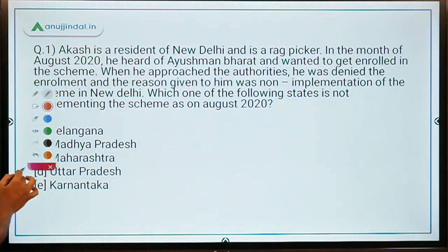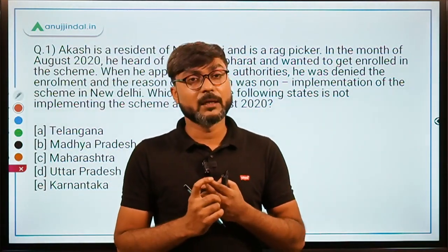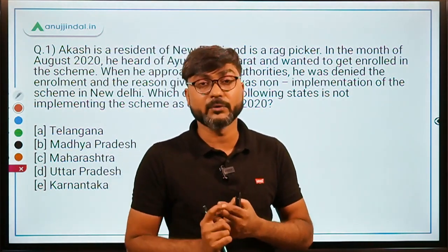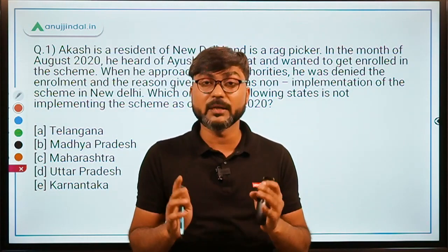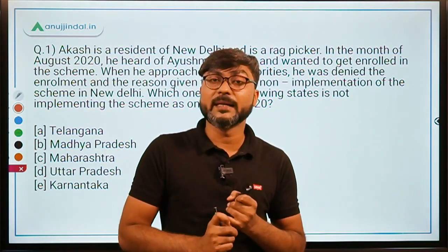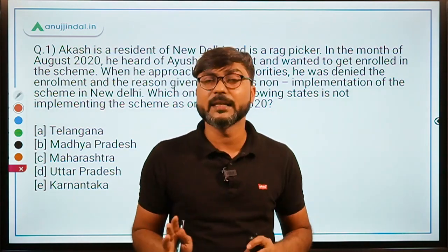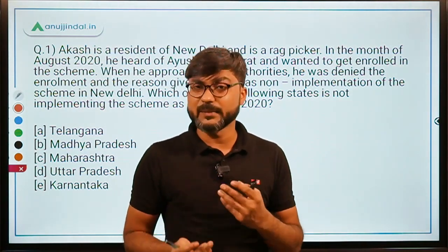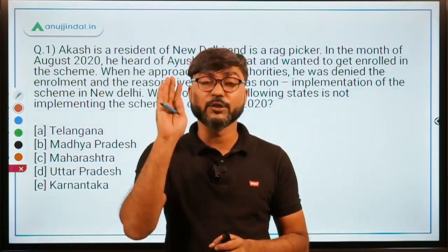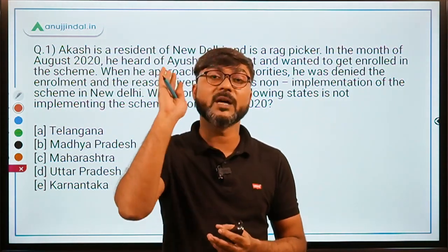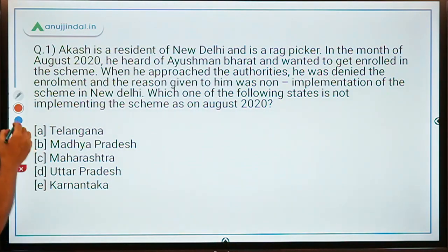To summarize: Ayushman Bharat was launched in 2018 to provide better healthcare facilities and financial assistance to poor and deprived households. Under PMJAY, five lakh rupees insurance is provided per family, not per individual. The National Implementing Agency is the National Health Authority, CEO Dr. Indu Bhushan, under the Ministry of Health and Family Welfare.